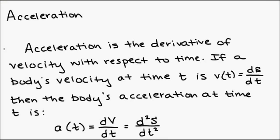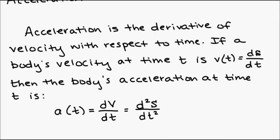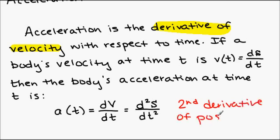Acceleration is the derivative of velocity, with respect to time. If a body's velocity at time t is V(t) equals dS/dt, then the body's acceleration at time t is a(t) equals dV/dt, which is your second derivative of the position function.